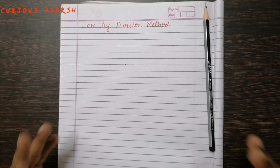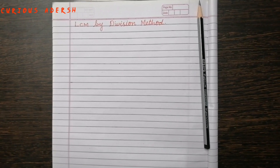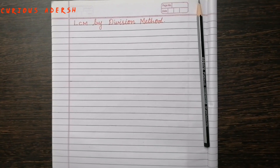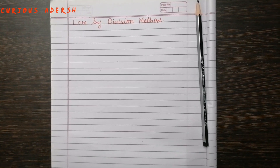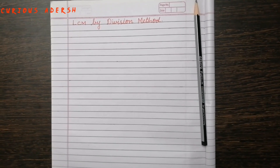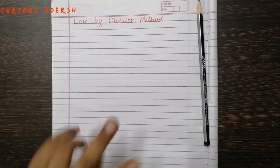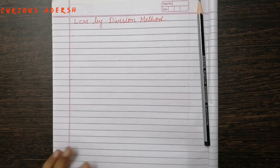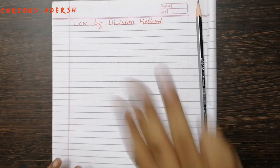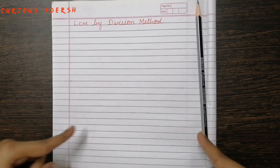Hello everyone, welcome back to Curious Adosh. Today, let's see how to find LCM by division method. First, we'll see for two numbers and then for three numbers. Now let's jump into it.